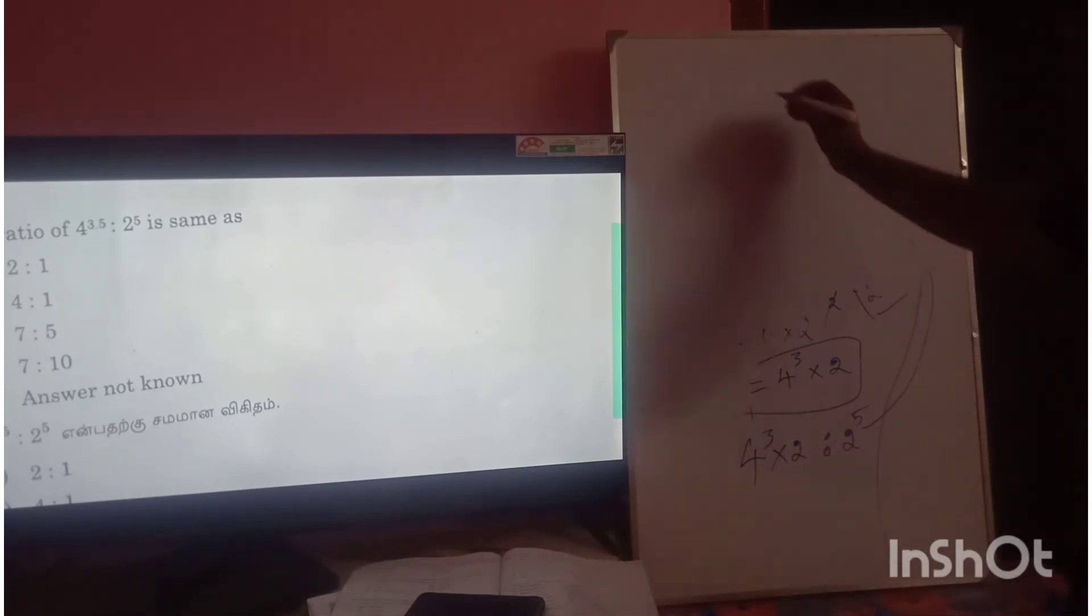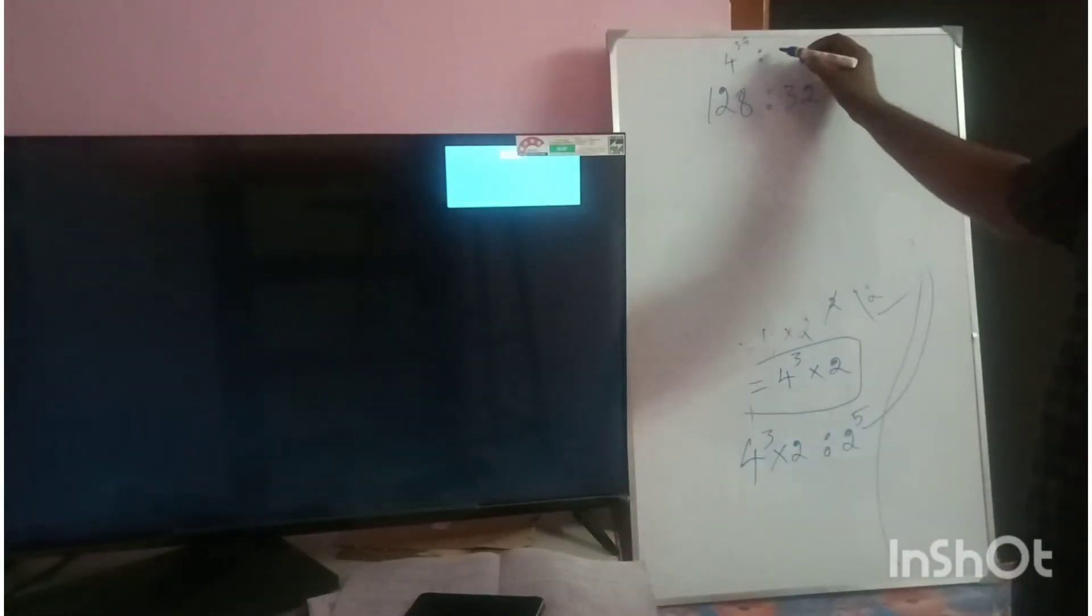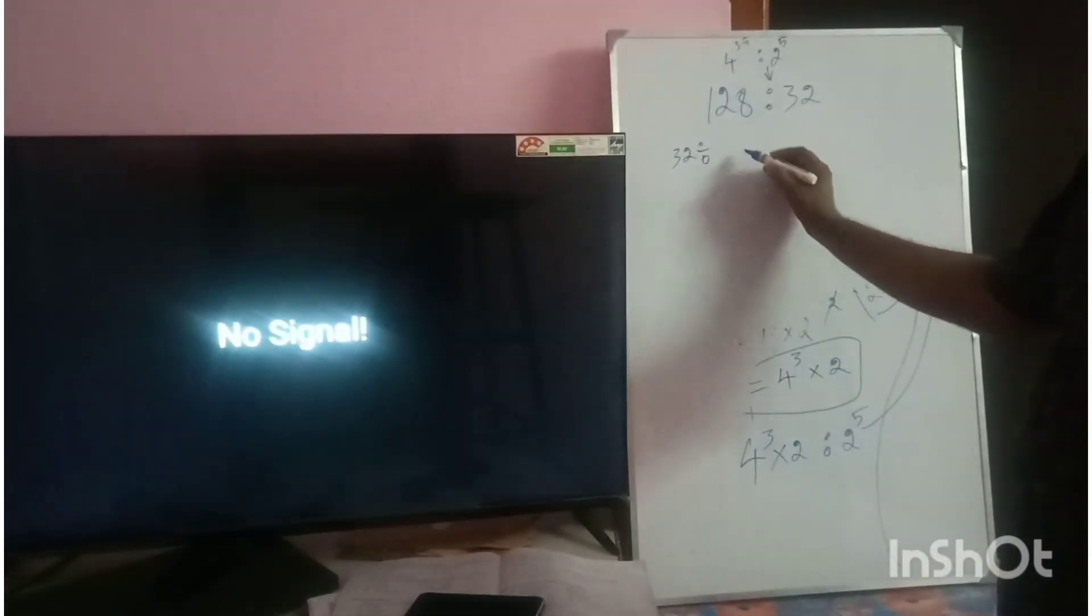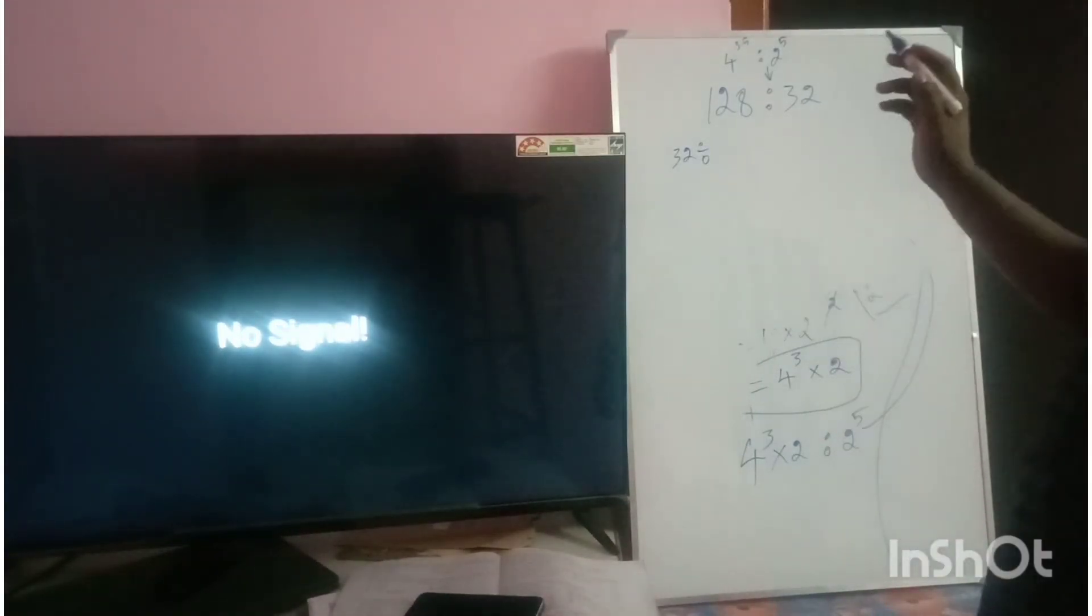So 128 to 32. Dividing both by 32: 128 divided by 32 equals 4.